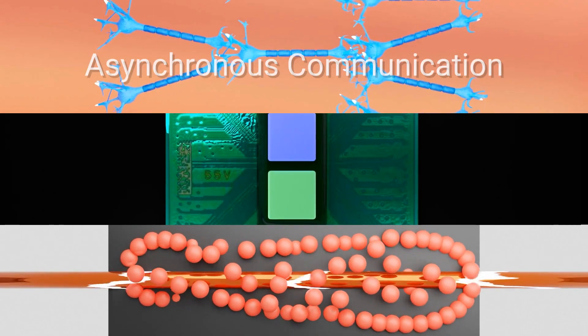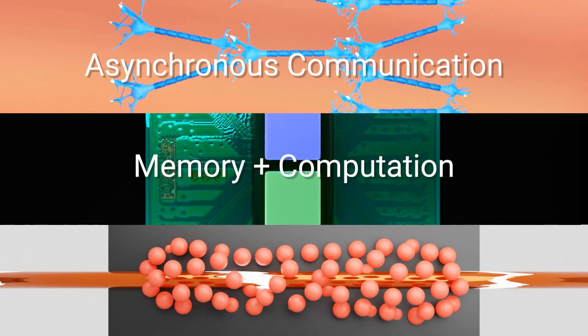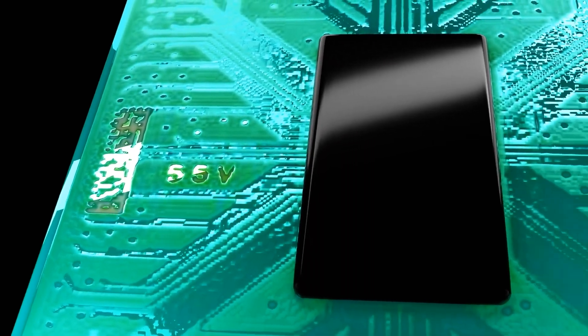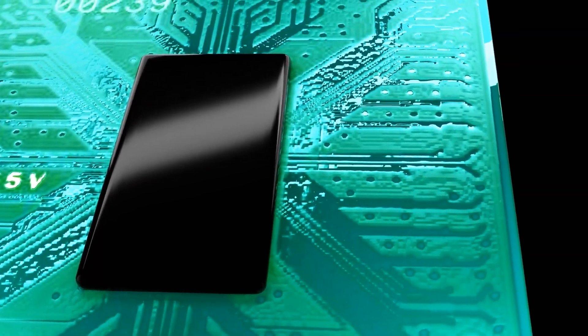Neuromorphic chips use asynchronous communication, combined memory and computation, and learning to make computing and AI more energy efficient and accessible.